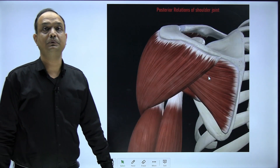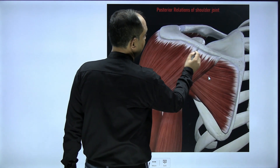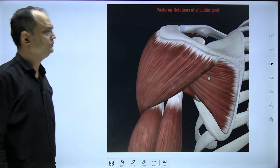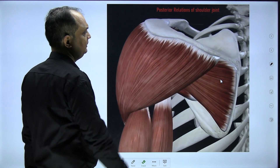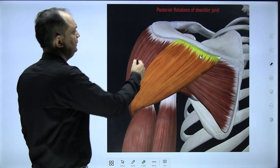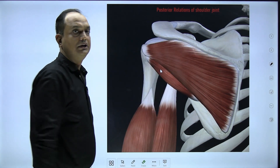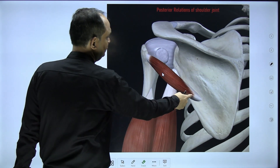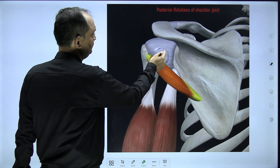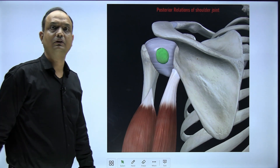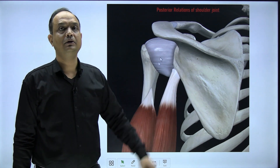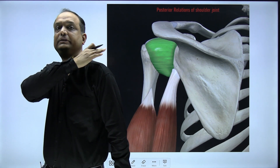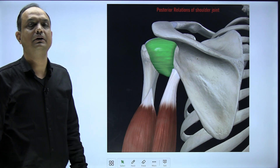In this video clip you can see the posterior relation. The spinous process of the scapula is visible as the origin of the posterior fibers of the deltoid. When you remove these posterior fibers of the deltoid, you can appreciate the muscles inserting on the greater tubercle — infraspinatus and, below it, teres minor. Deep to the infraspinatus, you can see the infraspinatus bursa. So these are the posterior relations of the shoulder joint.